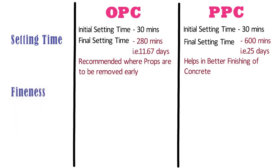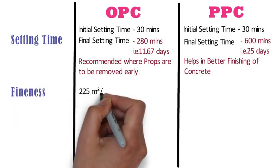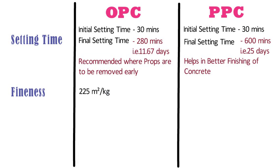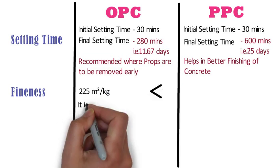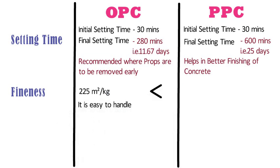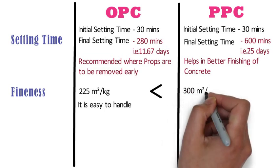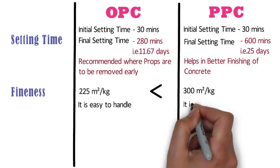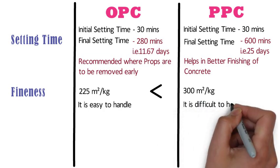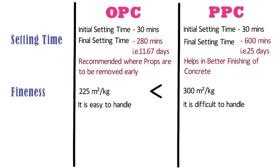Fineness. The fineness of OPC is at least 225 m² per kg, which is lower than PPC, hence it is easier to handle. Whereas the fineness of PPC is at least 300 m² per kg, which is higher than OPC, hence it is more difficult to handle, though this is not a major concern.